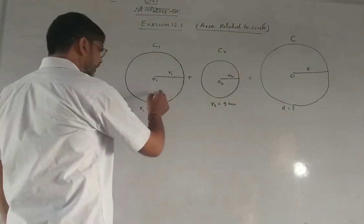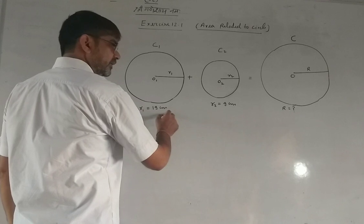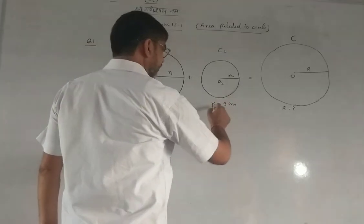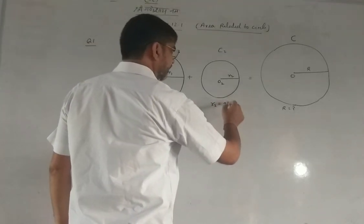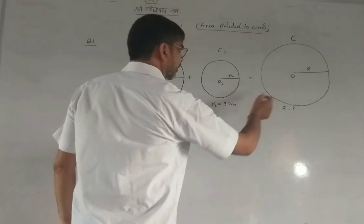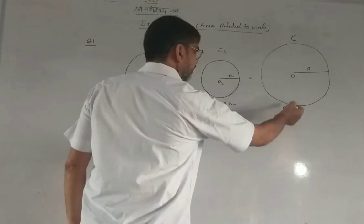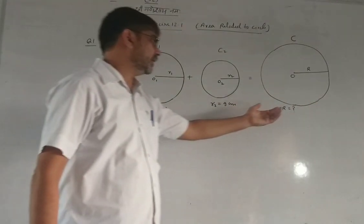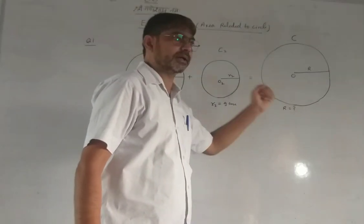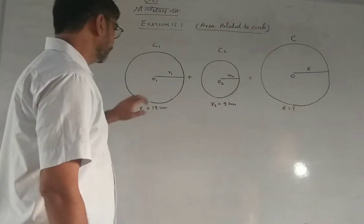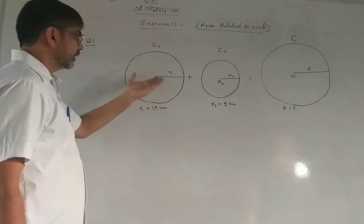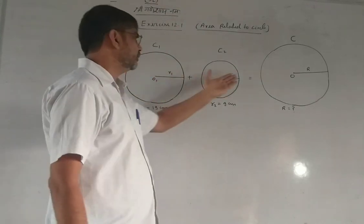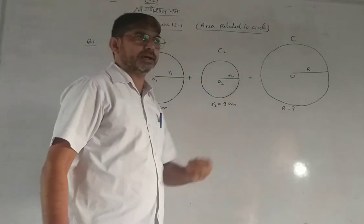The radius of the first circle is 19 cm and the second is 9 cm. I am going to find the radius — R1, R2, and capital R.